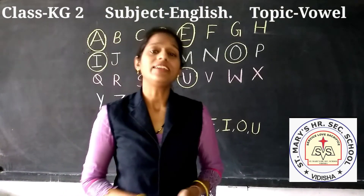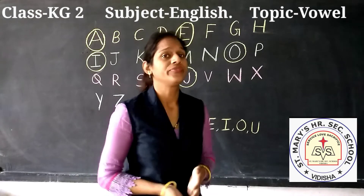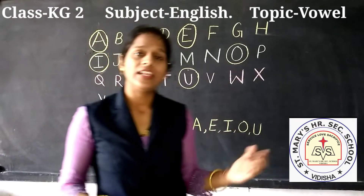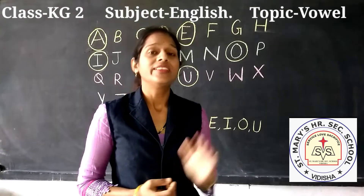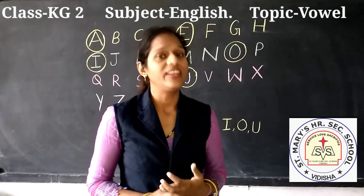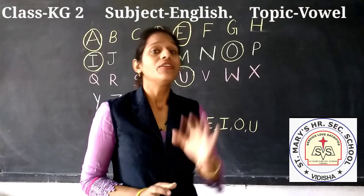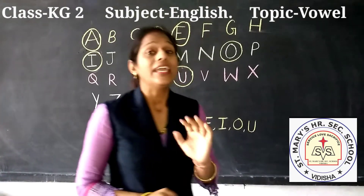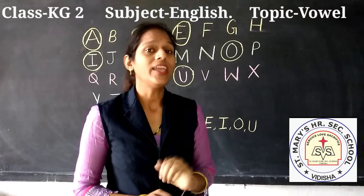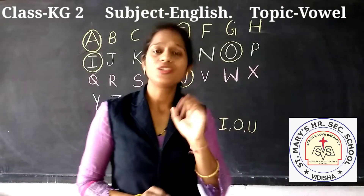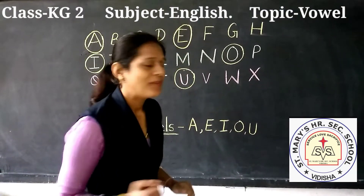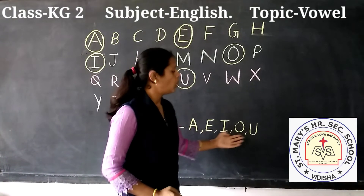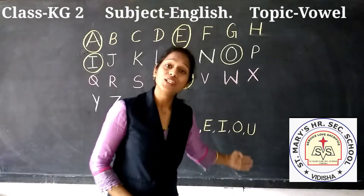I will tell you a story. Once upon a time, there was a village in which five friends lived. These five friends were the five vowels. Their names were A, E, I, O, and U.